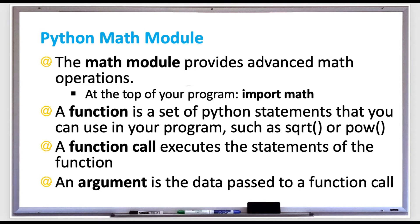The math module provides a lot of functions — which are operations that you can use in your program — such as sqrt for square root, or pow for the power of one number to the other. Using a function is referred to as a function call, so anytime you're using the square root function or the pow function, you're calling the function.